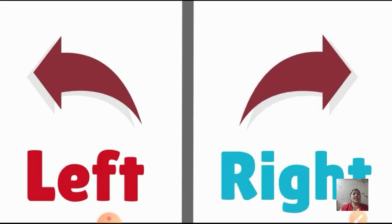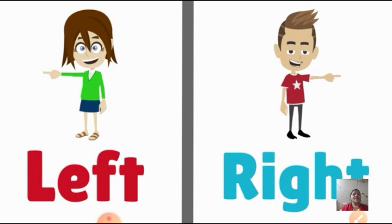So children, see the arrows. The left hand side arrow tells left - the direction left. And the other arrow shows the direction right, which is to your right hand side. The girl is showing left hand side and the boy is showing right hand side direction.